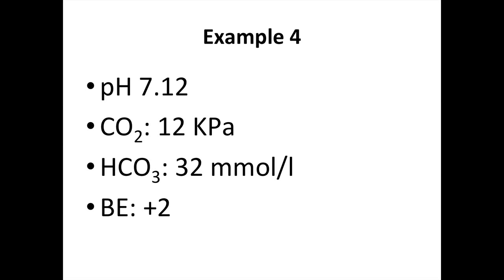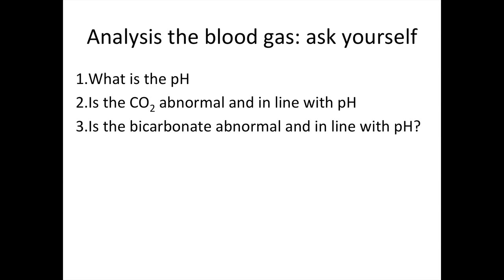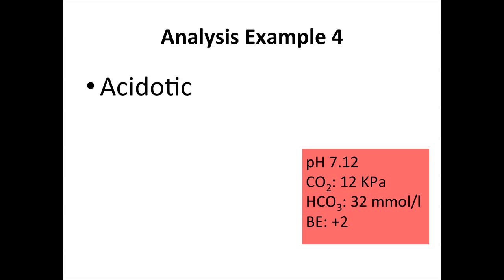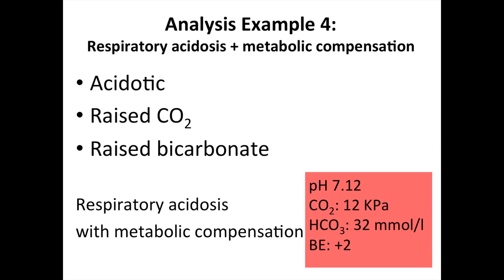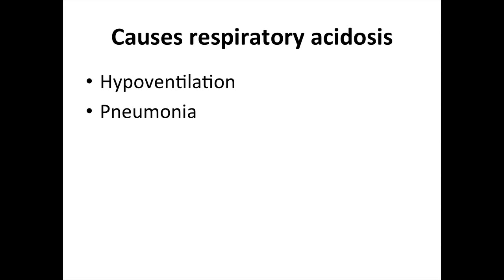Example 4: the pH is 7.12, carbon dioxide 12, bicarbonate 32, and a base excess of plus 2. The pH is acidotic. There is a raised carbon dioxide and a raised bicarbonate. The raised carbon dioxide is in line with the pH, giving a respiratory cause for the acidosis, with metabolic compensation — the raised bicarbonate is trying to add alkali into the acidotic situation. Causes of respiratory acidosis include hypoventilation and pneumonia.